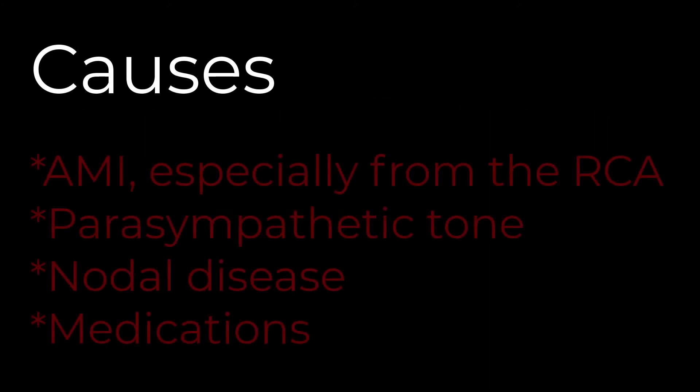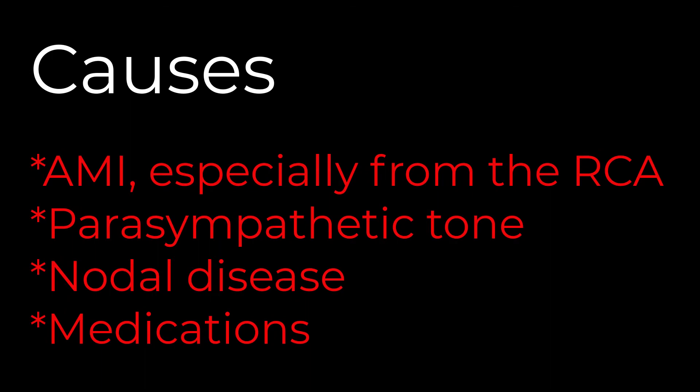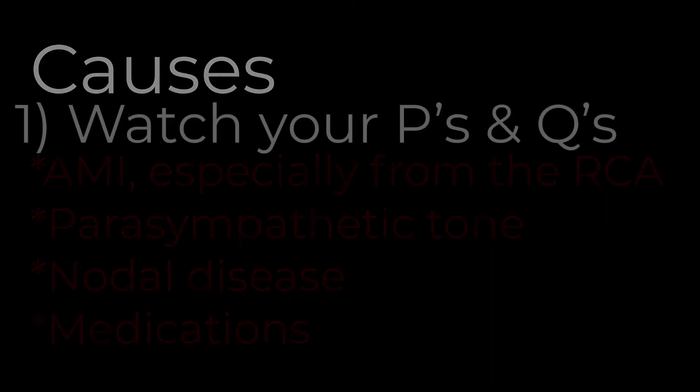Common causes of AV blocks include acute myocardial infarction, especially those involving occlusion of the right coronary artery, increased parasympathetic tone, calcification or other diseases of the conduction system, and medication overdoses, especially from digoxin or tricyclic antidepressants.